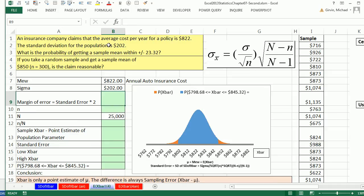An insurance company claims that the average cost per year of the policy is $822. The standard deviation for the population is known to be $202. What is the probability of getting a sample mean plus or minus about $23? If we take a random sample and get a sample mean of $850 with n equals 300, is the original claim of $822, does it seem reasonable?